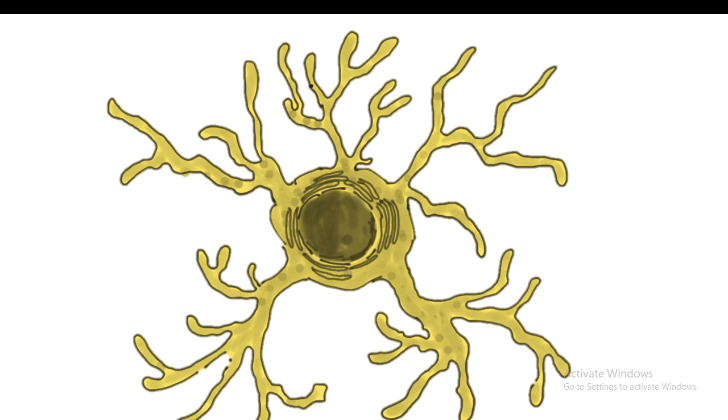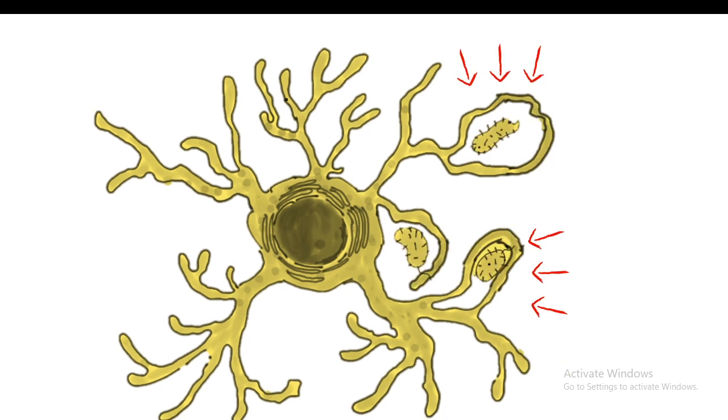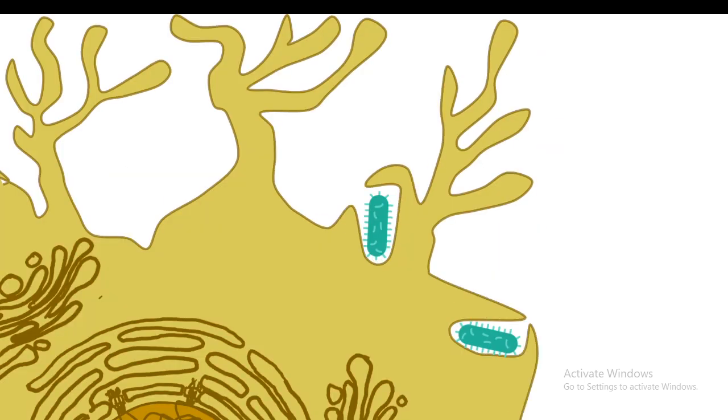Here is a dendritic cell which is an antigen presenting cell. With its long dendrite-like processes, it samples bacteria or any other pathogens. Whenever it encounters a bacteria, it would engulf and phagocytose it.